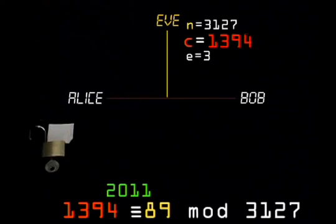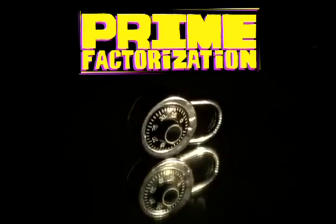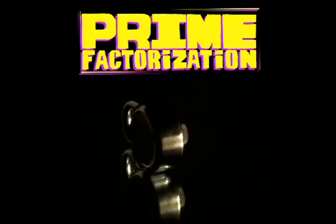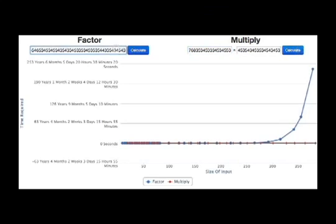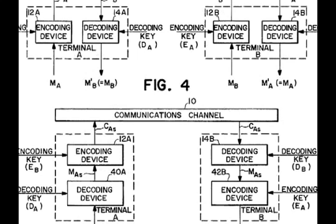Notice that Eve, or anyone else with C, n, and e, can only find the exponent d if they can calculate phi n, which requires that they know the prime factorization of n. If n is large enough, Alice can be sure that this will take hundreds of years, even with the most powerful network of computers.